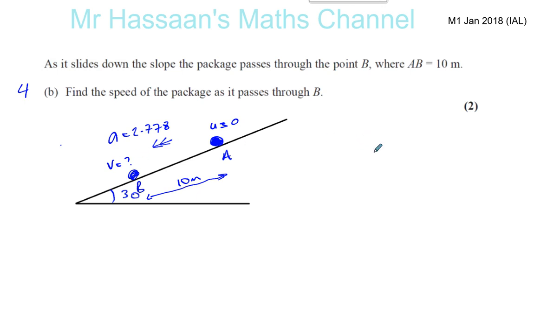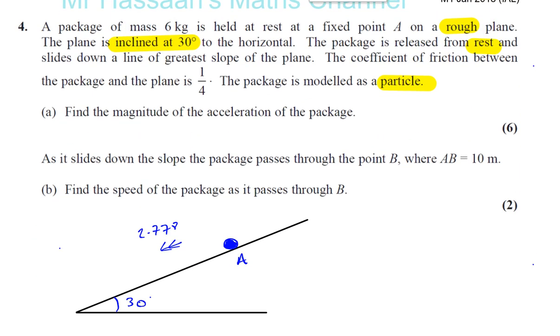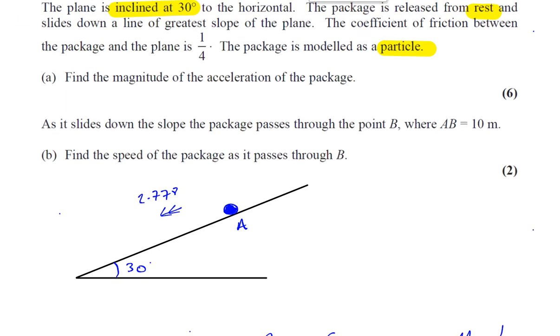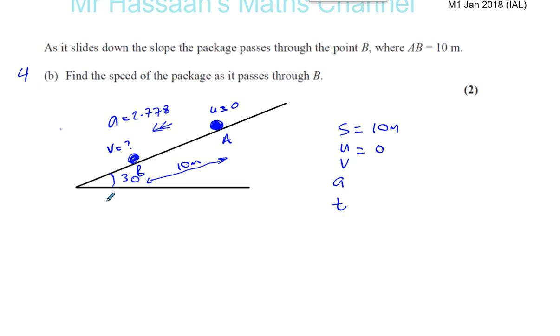This is a typical kinematics question with constant acceleration, so we can use the SUVAT equations. Let's write down SUVAT to see exactly what we have. We know that s is 10 meters, we know that u is zero meters per second because it's not moving, so it's at rest in the beginning as mentioned in part a. If we go back to part a, it tells us that it's released from rest and slides down the gorgeous slope.